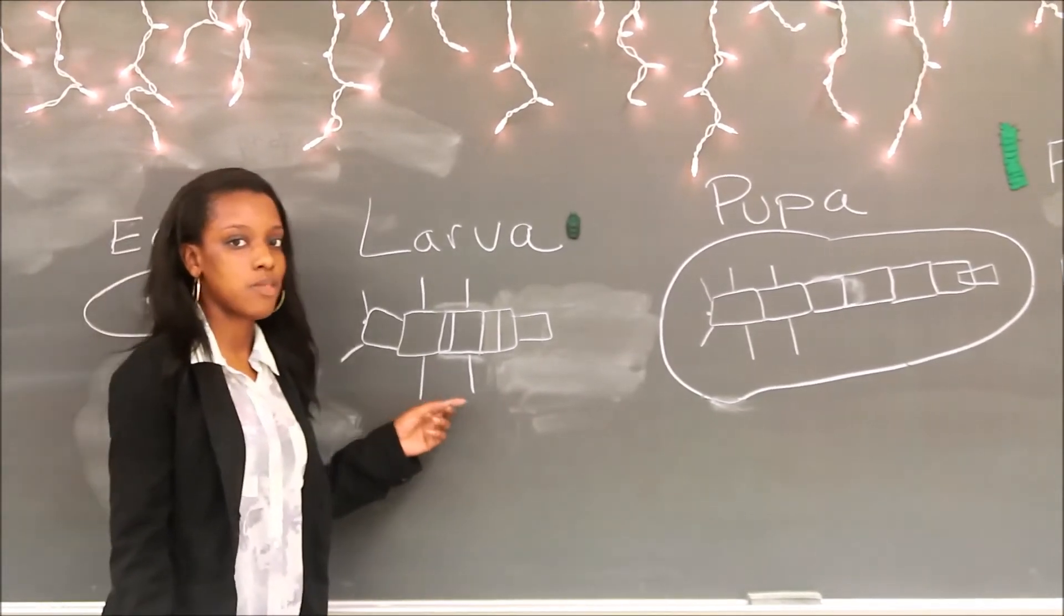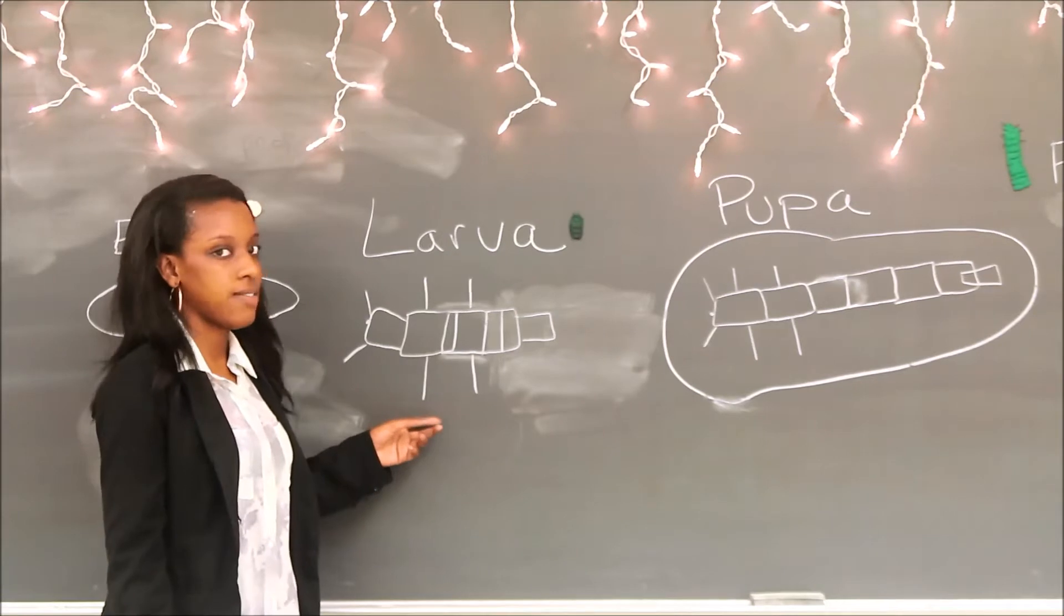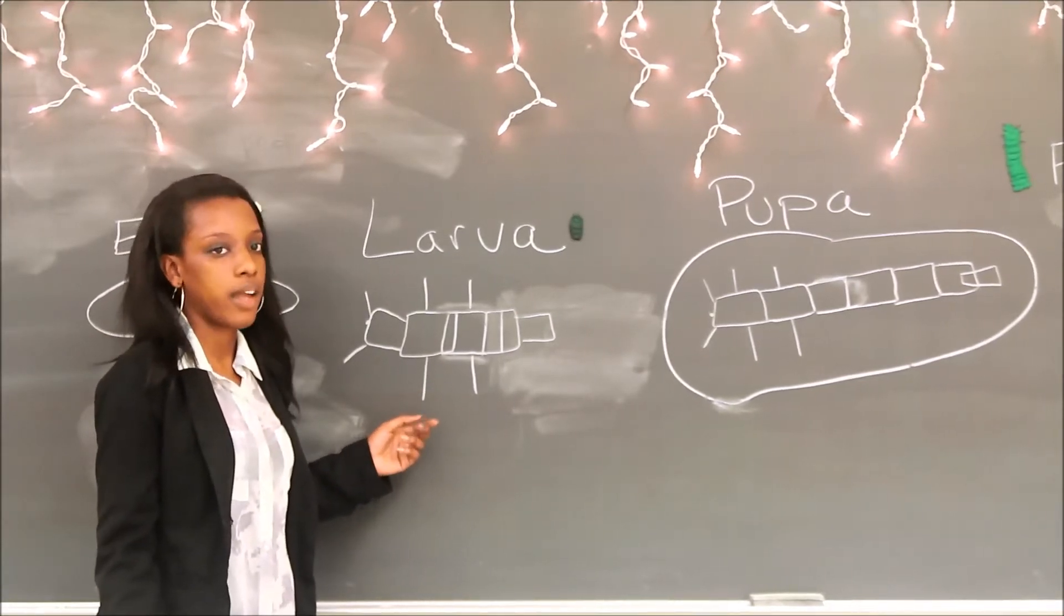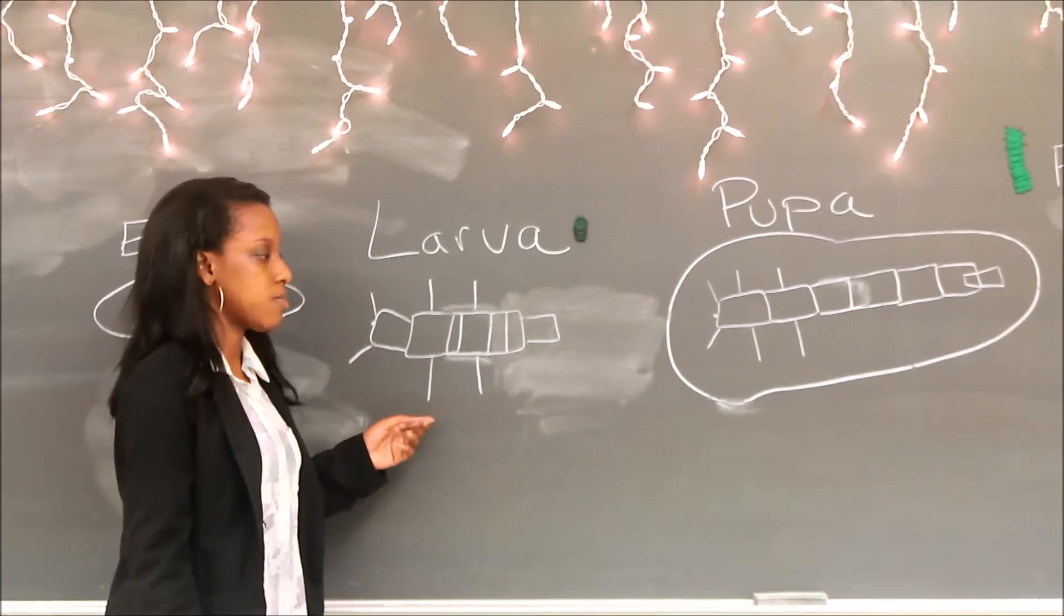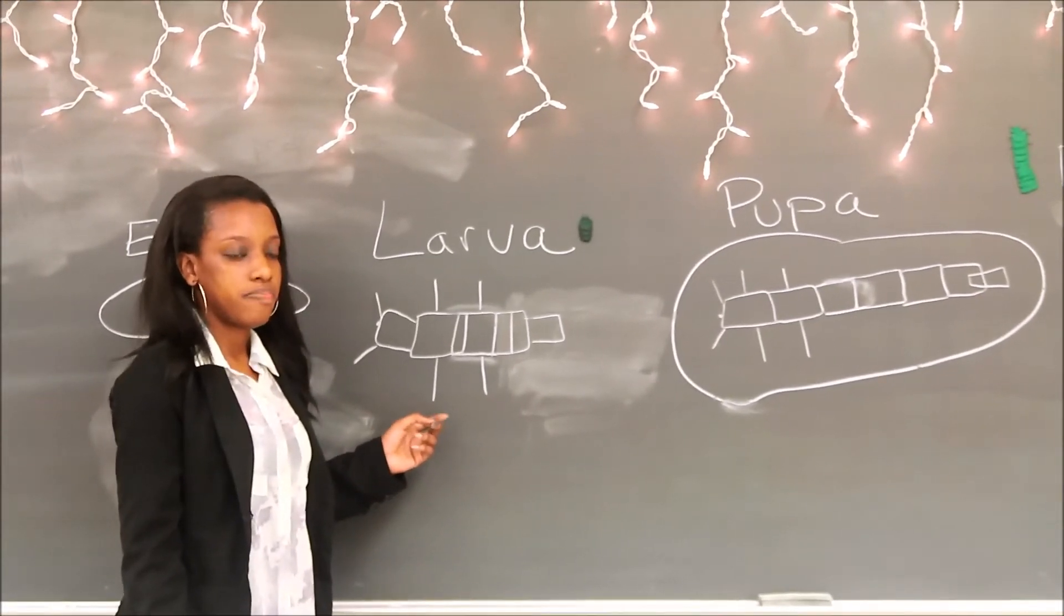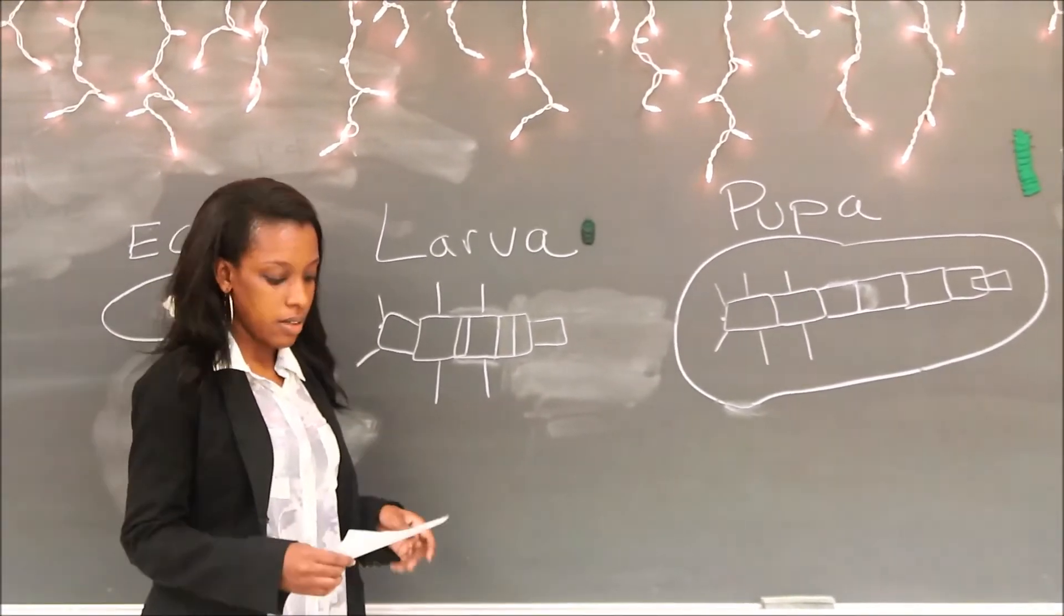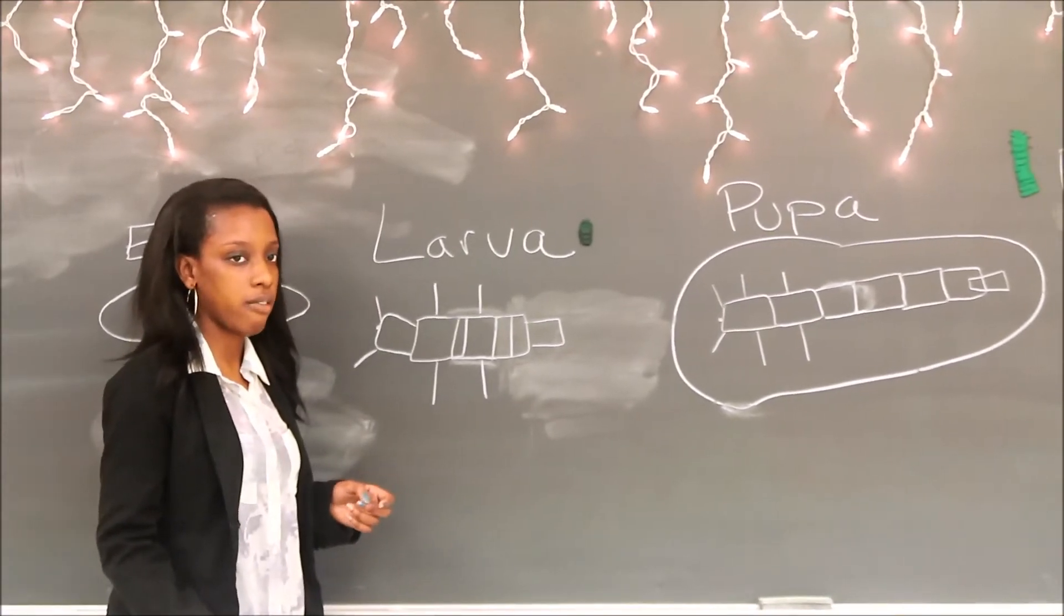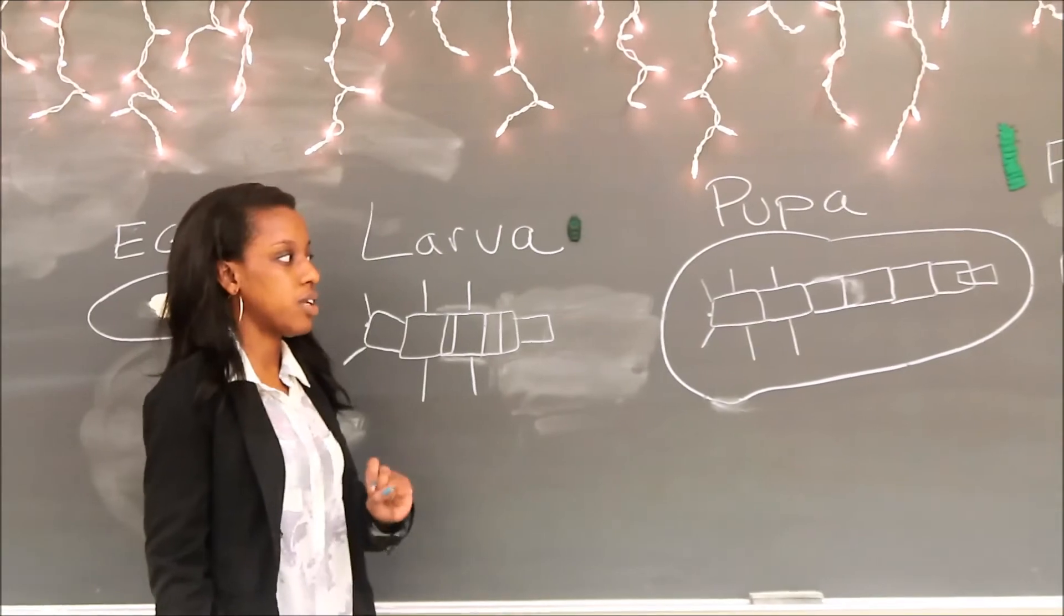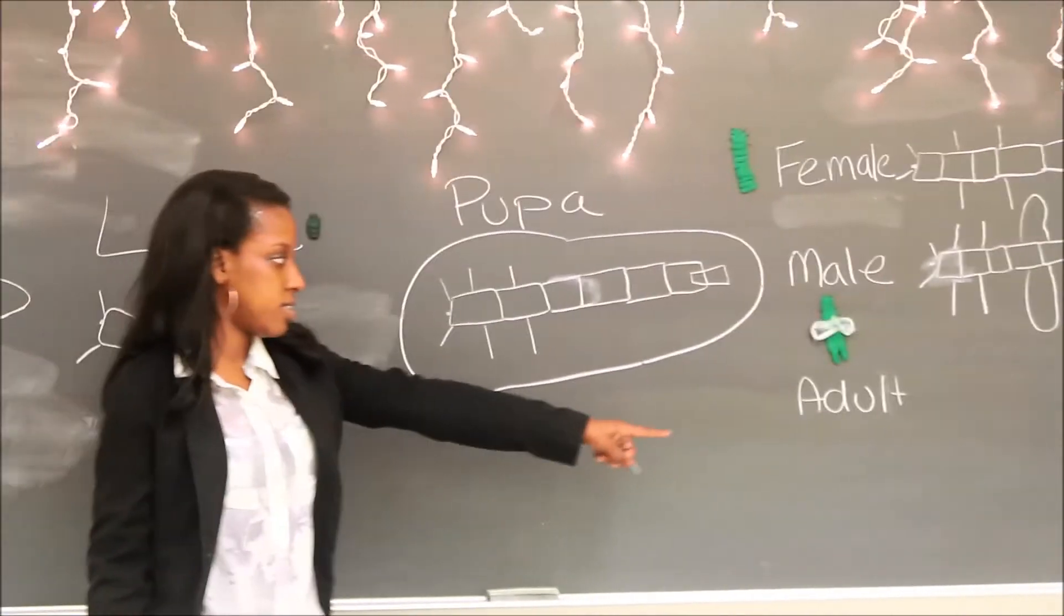The glowworm spends most of its life in this life cycle, around nine months or so. It spends most of its time trying to feed and build up its food reserves so it'll have a lot of energy supply during its adult stage.